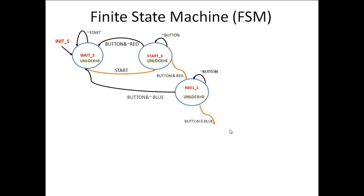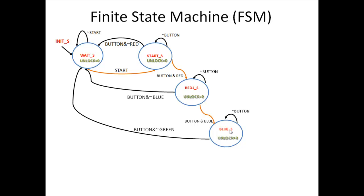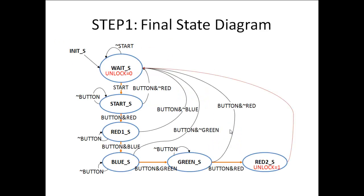If a button is pressed and it's a blue button, the system enters the blue state and no unlock is issued. It remains in blue state until no button is pressed. If a button is pressed and it's not a green button, the system goes back to wait state because the correct next code is green. If a green button is pressed, the system goes to the red two state, where the unlock pulse is issued.